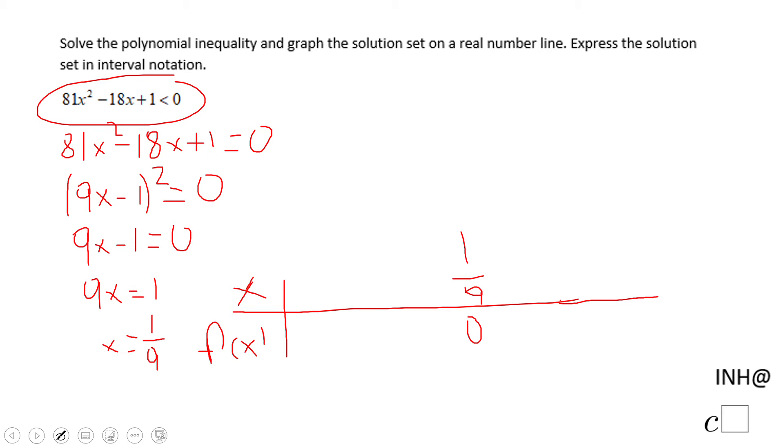So if we take a value like zero, which is left of 1 over 9, and we go here, we're going to end up with a positive value, right? Because 9x becomes zero and negative 1 squared is a positive number.